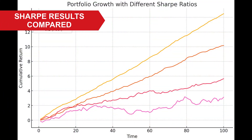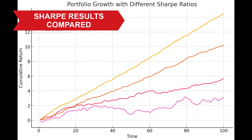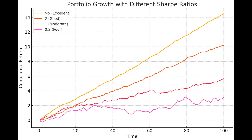Hopefully this chart will put it all into perspective. We've got four different scenarios here with different Sharpe ratios. The bottom pink line has a 0.2 Sharpe — see the way the P&L just drifts up and down all over the place. Compare that to the top line, which is Sharpe over 5. I talked earlier about that 45-degree upward slope — that's the one we are looking for. You can also see a Sharpe of 2, which is good, and a moderate Sharpe of 1.